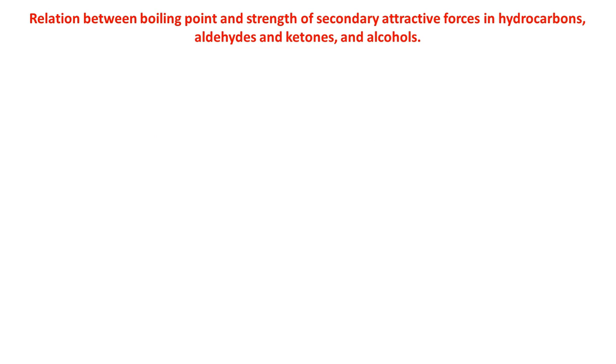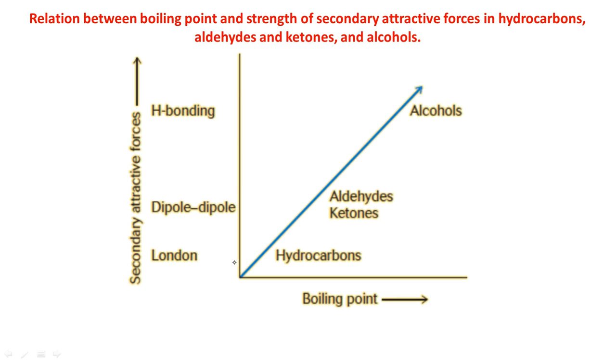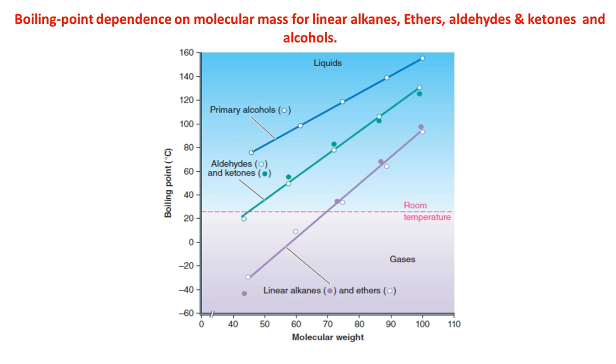The same can be shown in graph, that is correlation between boiling points and strength of intermolecular interaction. Due to the presence of only weak intermolecular London forces, hydrocarbons have lower boiling point than aldehydes and ketones, which possess slightly stronger dipole-dipole interactions. The alcohols have higher boiling point due to strong intermolecular hydrogen bonding. As shown in this graph, the boiling point differences between alkanes, aldehydes and ketones, and alcohols narrow with increasing molecular mass. This is because, as the alkyl chain length increases, the effect of polar CO and OH group on secondary attractive forces decreases.